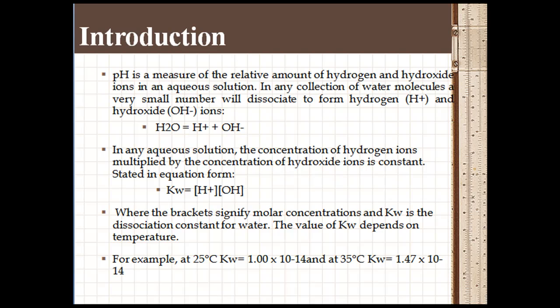The water molecule will dissociate into hydrogen ion and hydroxide ions. In terms of molar concentration, water at 25 degrees Celsius contains equal numbers of hydrogen and hydroxide ions per liter.